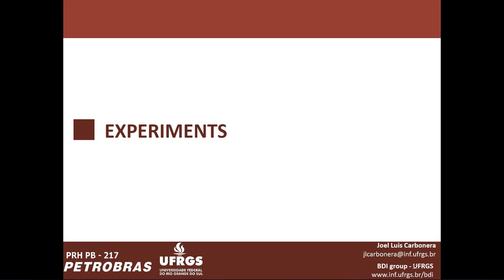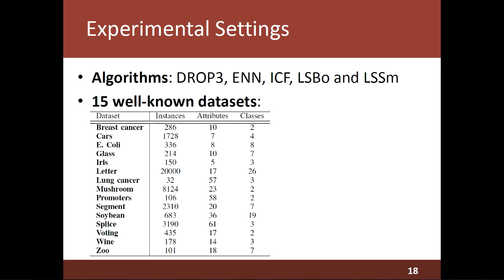Now I'm going to discuss our experiments. We compared the performance of LDIS with the performances of five well-known instance selection algorithms available in the literature: the DROP3 algorithm, the ENN, ICF, LSBO, and LSSM. In these experiments, we considered 15 well-known datasets available in the UCI machine learning repository. In this table, we can see a brief description of each dataset.